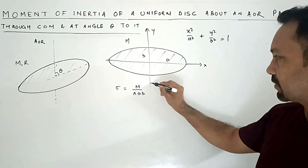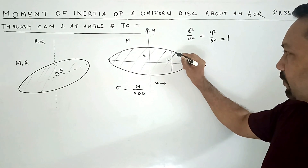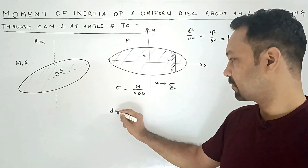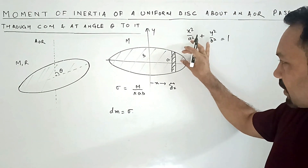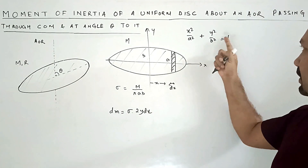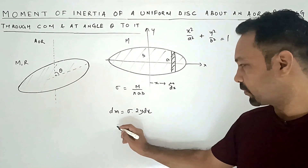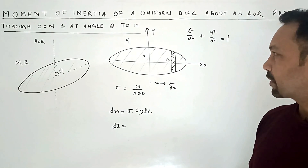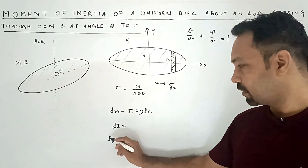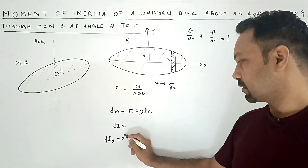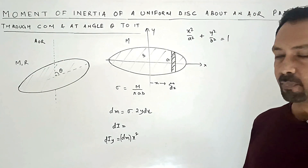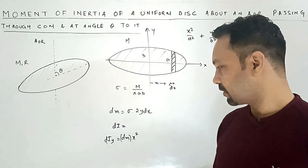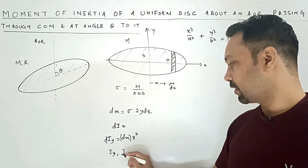Take an element at a distance x with thickness dx. The mass of this element dm equals sigma times the area of the element. The area is 2y·dx, where y comes from the ellipse equation. The moment of inertia of this element about the y-axis is dm·x². Using this, substituting the value of dm and y in terms of x, we can find Iy, and from symmetry we can find Ix.